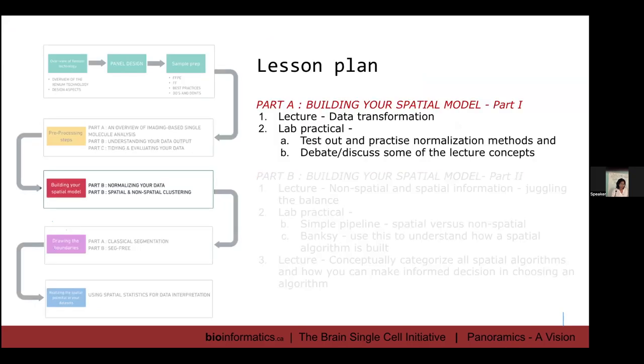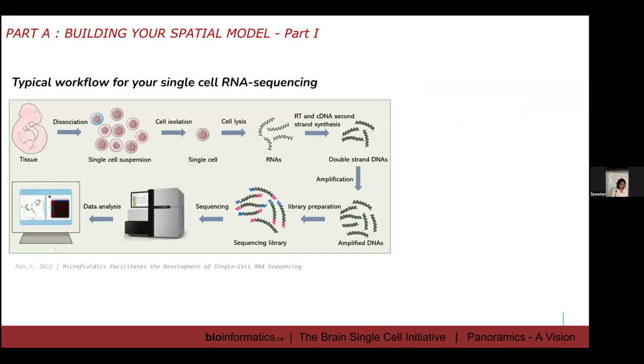First, I am going to start off with a little lecture. This is a typical workflow for your single cell RNA sequencing. You have your tissue, you dissociate your tissue and then each cell hypothetically becomes a droplet or falls into a single well in a plate. Then you do your reverse transcriptome generation and then you have your cDNA and then you amplify it, and then you sequence it.